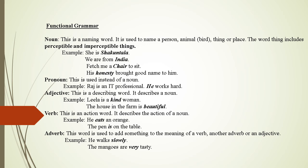Verb: This is an action word. It describes the action of a noun. Examples: He eats an orange. The pen is on the table.